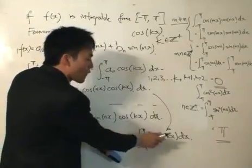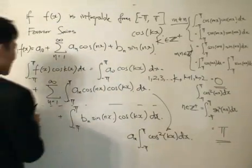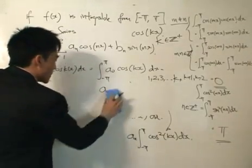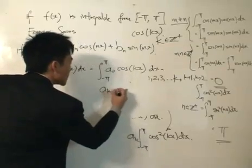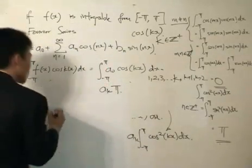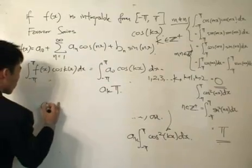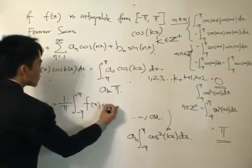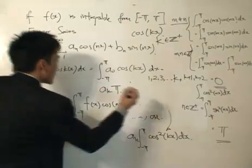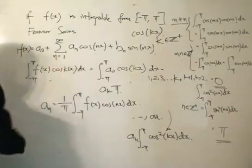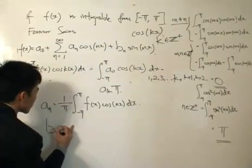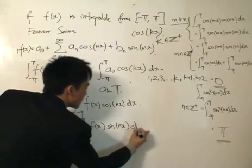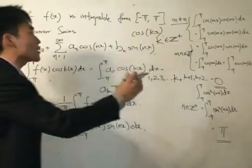We are left with aₖ times pi on the right side. So aₖ equals 1/π times the integral from minus pi to pi of f(x)cosine(kx)dx. Substituting the dummy variable back to n, we get: aₙ equals 1/π times the integral from minus pi to pi of f(x)cosine(nx)dx. Similarly, bₙ equals 1/π times the integral from minus pi to pi of f(x)sine(nx)dx — same approach, integrating sine squared instead.